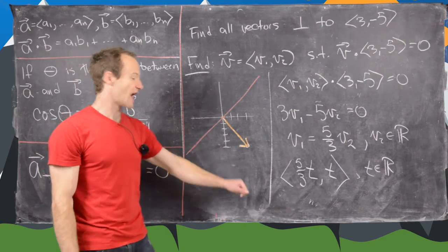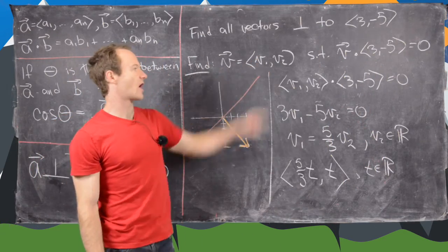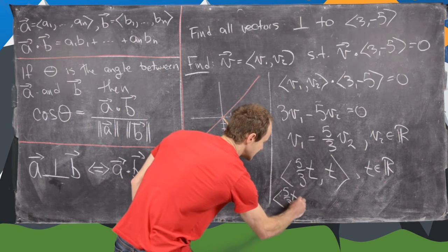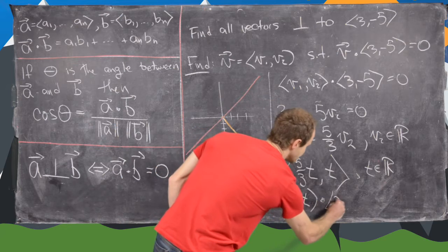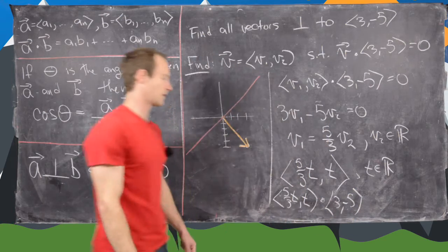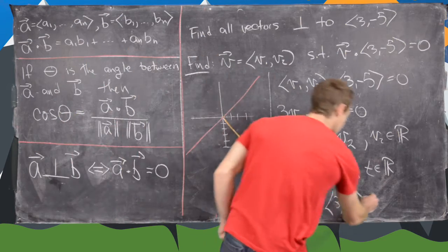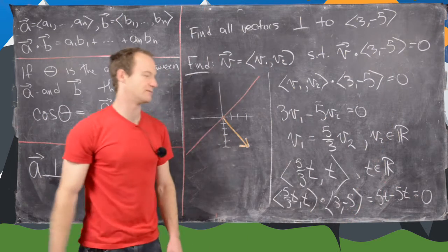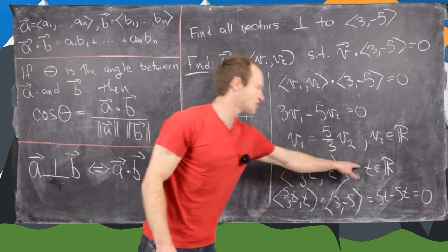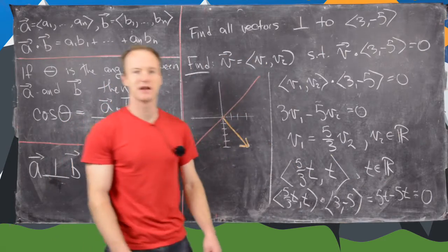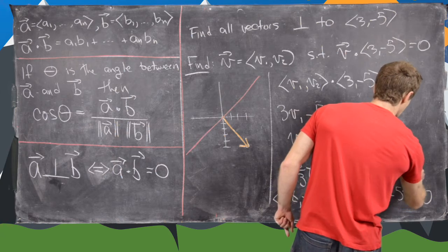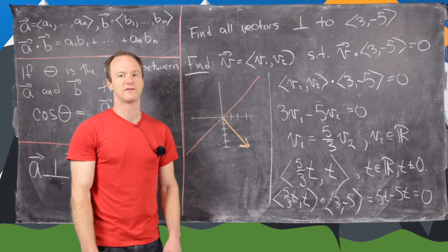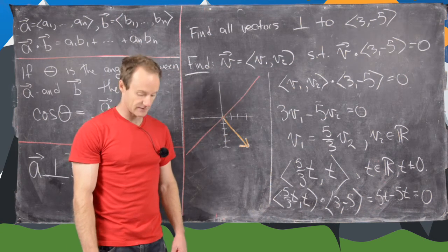And so this is where t is any real number. So now maybe we want to check that this is indeed orthogonal to our original vector. So we can do 5 thirds t, comma t dot 3, -5. And notice that's going to give us 5t minus 5t equals 0, which makes it orthogonal. And I should point out here that we actually don't want t to be any real number. We want t to be any real number except for 0 because the 0 vector, we don't really like to think of that as being orthogonal to any given vector.